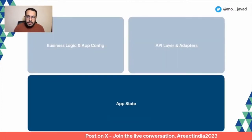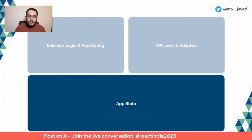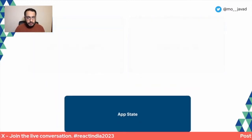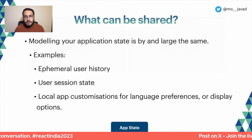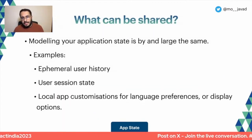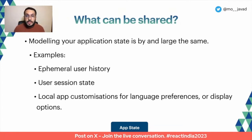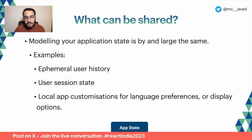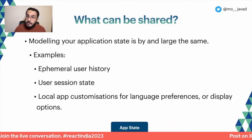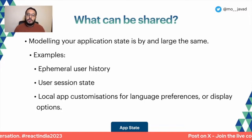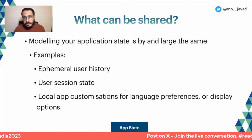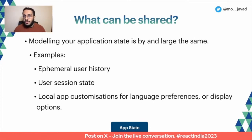Perhaps the most interesting bit in terms of what can be shared is within the app state. When you're modeling your app state, this is going to be largely the same. Examples include user history, user session state, local app customizations like localization settings, display options, accessibility settings, dark mode, light mode — whatever you may have.